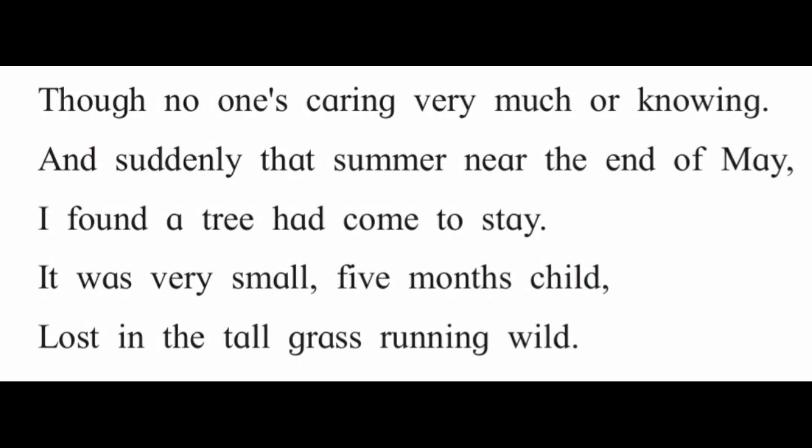And suddenly that summer near the end of May, I found a tree had come to stay. It was very small, five months child, lost in the tall grass running wild. The poet tells us that summer at the end of May he found a cherry plant. The plant was very small — the poet calls it a five months child. The cherry plant was lost in the tall wild grass. Here the plant of cherry is personified; this is an example of personification where the plant is described as a person.